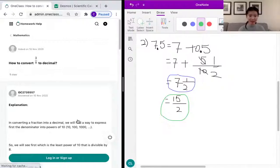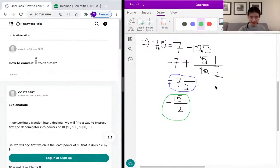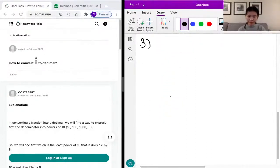Our next problem is asking us to convert a fraction to a decimal. In our previous problem we converted a decimal to a fraction, and now we're doing the other way around, converting a fraction to a decimal. We're converting 3 over 8 to a decimal.